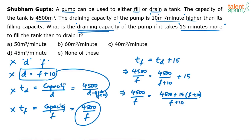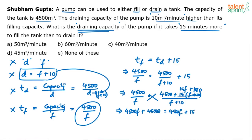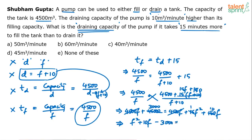Solving directly: 4500 by F equals 4500 by (F plus 10) plus 15. The right side becomes [4500 plus 15(F plus 10)] divided by (F plus 10), which is [4500 plus 15F plus 150] divided by (F plus 10). Cross-multiplying: 4500(F plus 10) equals 4500F plus 15F² plus 150F. So 45000 equals 4500F plus 15F² plus 150F. The 4500F terms cancel, leaving 15F² plus 150F minus 45000 equals zero.